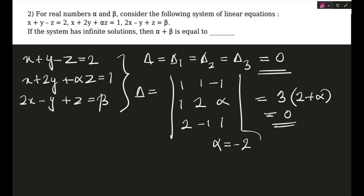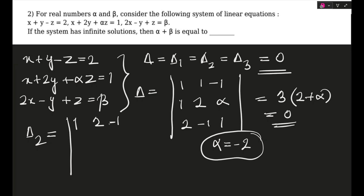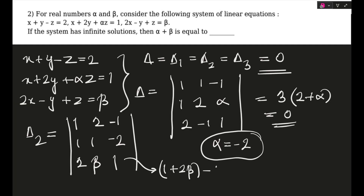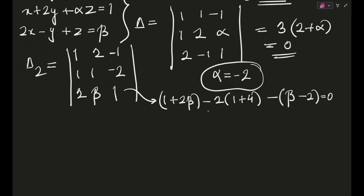Calculating Δ = |1 1 −1; 1 2 α; 2 −1 1| gives 3(2 + α) = 0, so α = −2. Then calculating Δ₂ gives 1·(1 + 2β) − 2·(1 + 4) − (β − 2) = 0, which simplifies to β = 7. So α + β = −2 + 7 = 5.